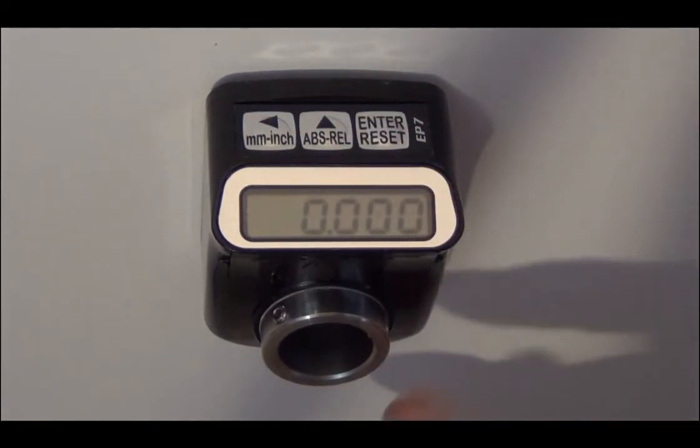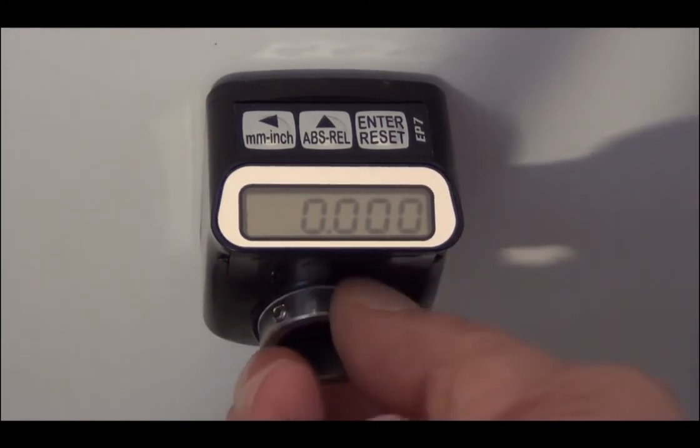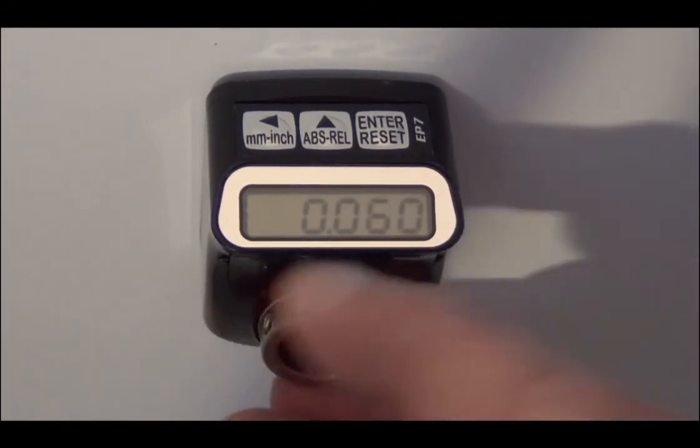Then depress the SHIFT LEFT button to exit the programming mode. Your EP7 is now programmed.